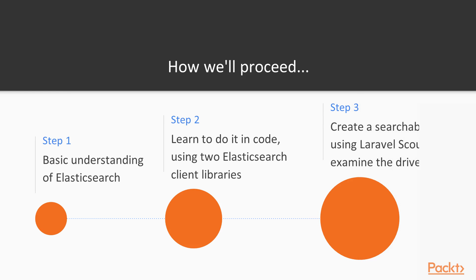In the third step, we'll fully integrate our Laravel application using Laravel Scout. We'll have our Laravel models, views, and routes. We'll write code in our controller so that we can take our models and build a search page and an advanced search page, and have a fully functional, searchable Laravel web application.